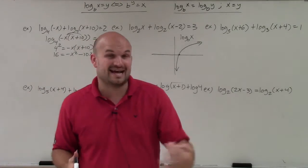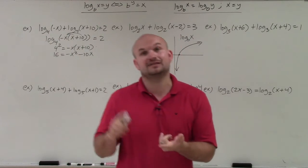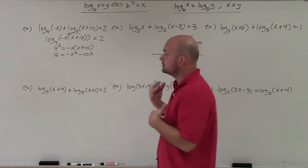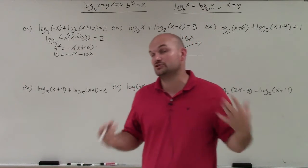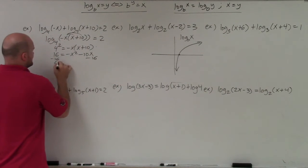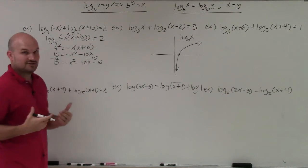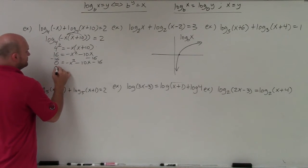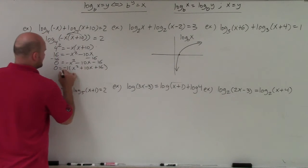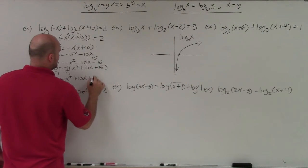I have a quadratic — x is being raised to the second power — so I'll treat this as a quadratic equation and solve by factoring. The first thing is to get all terms on one side and set equal to 0. So I have 0 equals negative x squared minus 10x minus 16. I don't like factoring when a is negative, so I'll factor out a negative 1, which won't affect my solution. That gives me 0 equals x squared plus 10x plus 16.